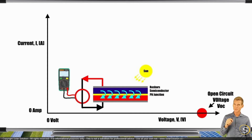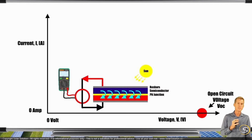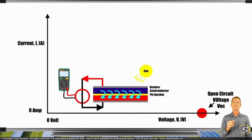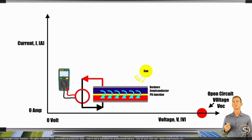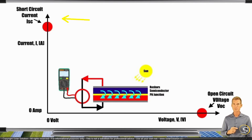The current is really high, but the voltage is really low because there's no resistance, no obstruction in the circuit. At this point we have a really high amperage — all the way at the top of the graph. This point is called the short circuit current, and the code for that is ISC — current short circuit.